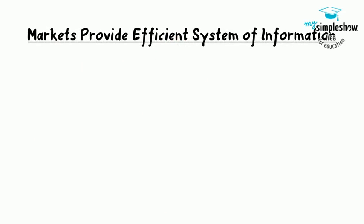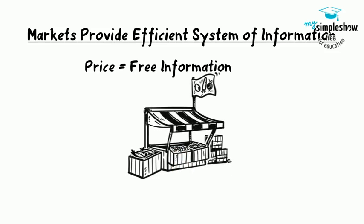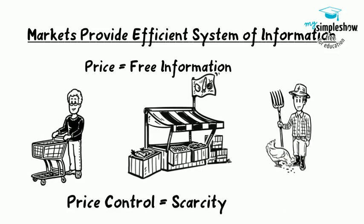Market as an Efficient System of Information. The market price system provides a highly efficient mechanism for disseminating information about relative scarcities of goods, services, labor, and financial capital. Market participants do not need to know why prices have changed, only that the changes require them to revisit previous decisions they made about supply and demand. Price controls hide information about the true scarcity of products and thereby cause misallocation of resources.